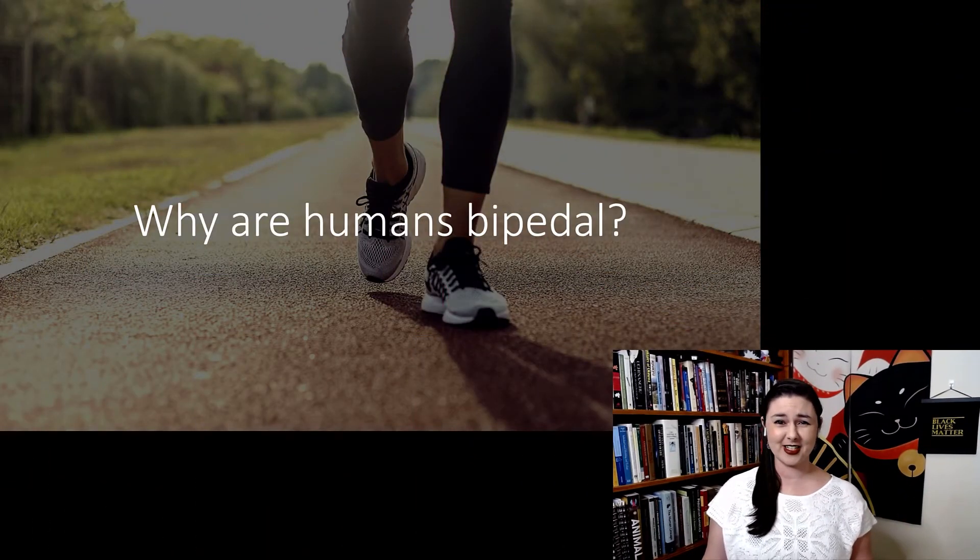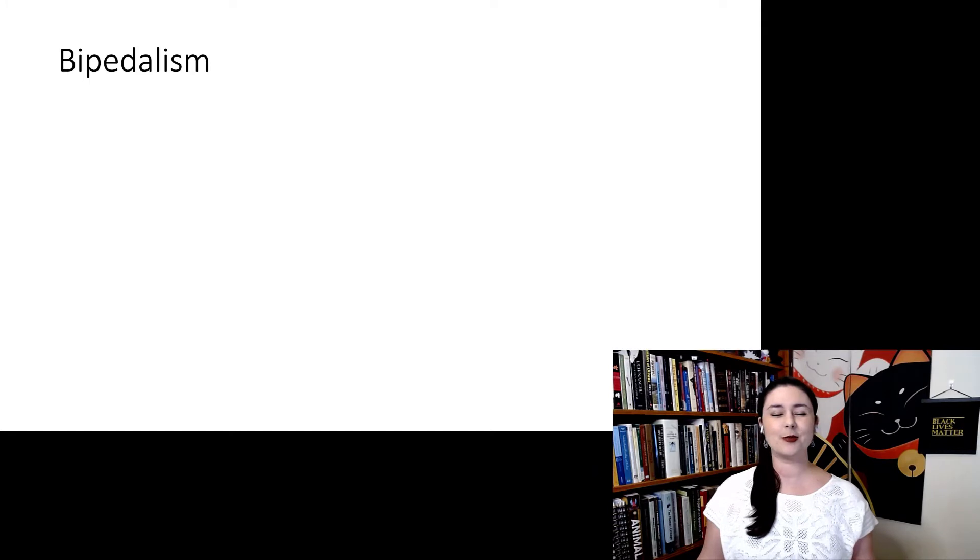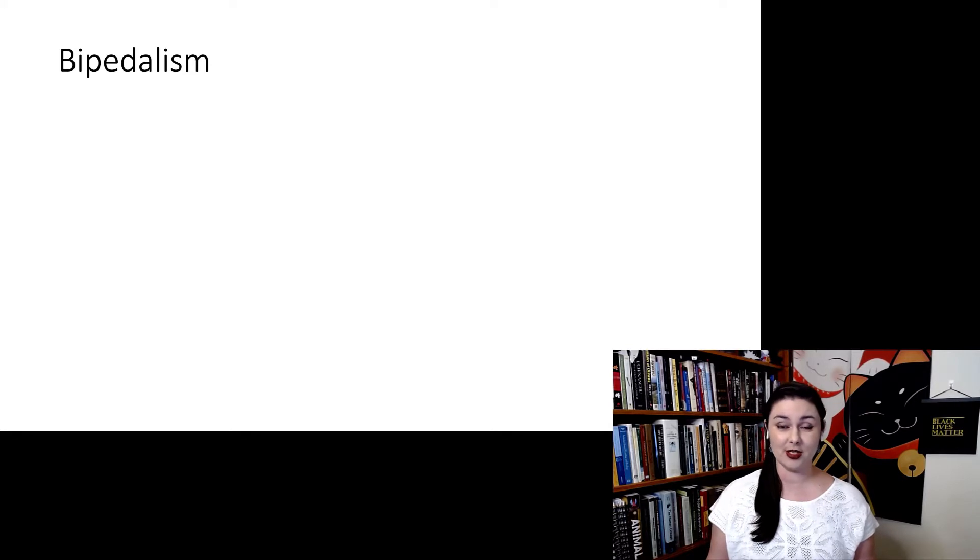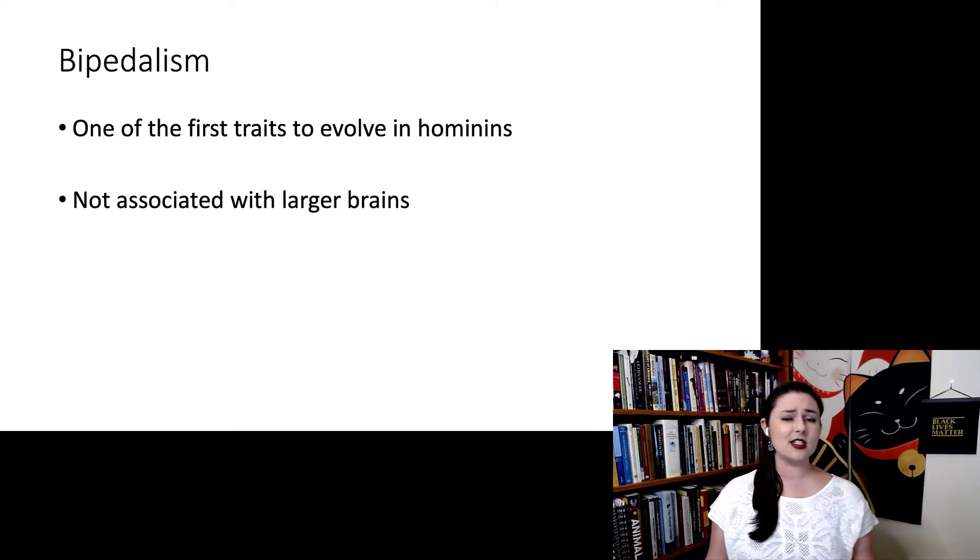So why are we bipedal? Bipedalism is us walking on two feet. And as you can see by looking at all of the putative fossil hominins, or the earliest hominins, this is one of the very first traits to evolve in our lineage. And it doesn't seem to be associated with larger brains. In fact, bipedality predates larger brains by a couple million years. So the question really is why? Why is bipedalism advantageous? But also, why did it happen now? And why isn't it paired with these other traits?